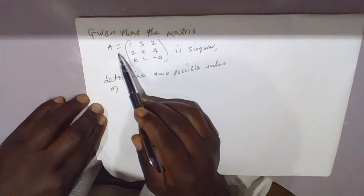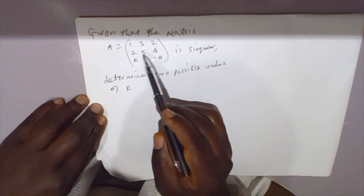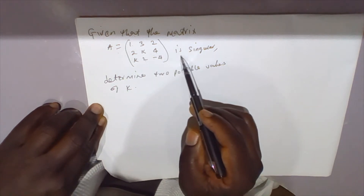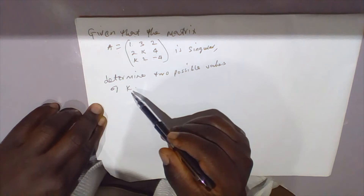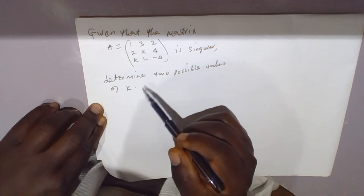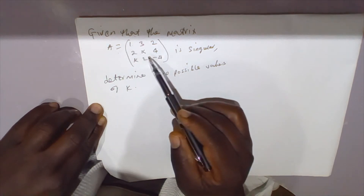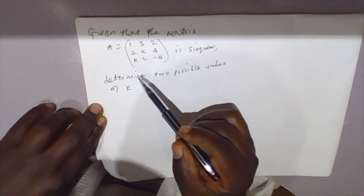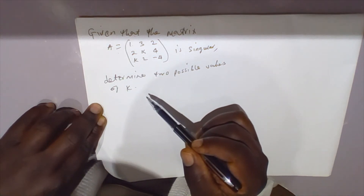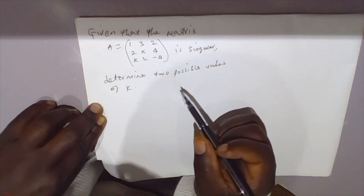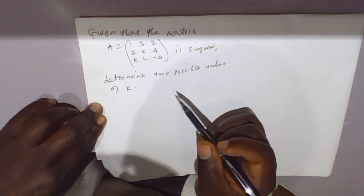Given that the matrix A equals 1, 2, 3 / 2, k, 4 / k, 2, negative 4 is a singular matrix, determine two possible values of k. This matrix has two unknown elements, both equal to k. One key thing to know is that a singular matrix has a determinant equal to zero.